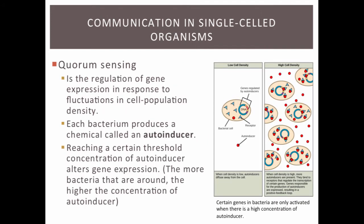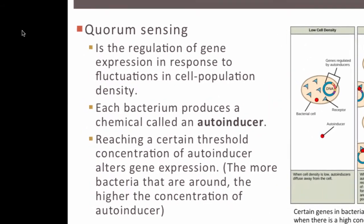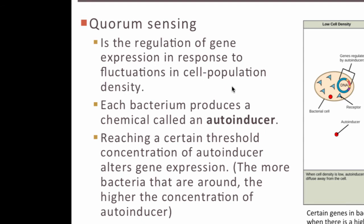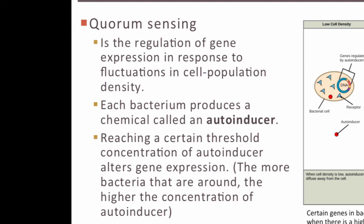Quorum sensing is the regulation of gene expression in response to fluctuations in cell population density. Regulation involves turning on, turning off, or adjusting something. Gene expression describes when a gene is turned on or off — if a gene is turned on, the protein it codes for is made. So regulation of gene expression alters when a protein is made, and you adjust that production in response to how many other bacteria are around. That's what quorum sensing means.